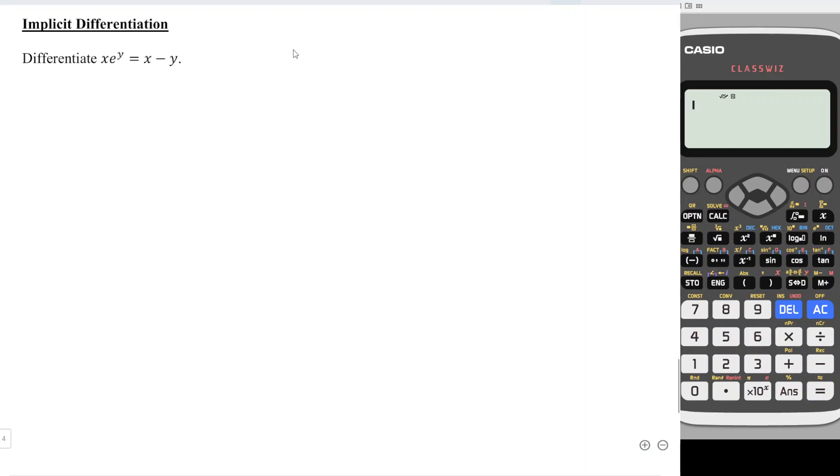So we can let u be equal to x and v be equal to e to the power of y. Since u is a function of x, we can differentiate with respect to x and obtain 1.